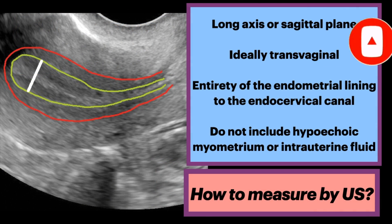How do we measure this by ultrasound? The endometrium should be measured in the long axis or sagittal plane, ideally transvaginally. The entirety of the endometrial lining to the endocervical canal should be in view. We measure the thickest echogenic area from one basal endometrial interface across the endometrial canal to the other basal surface. Care should be taken not to include the hypoechoic myometrium or intrauterine fluid.